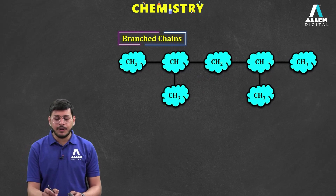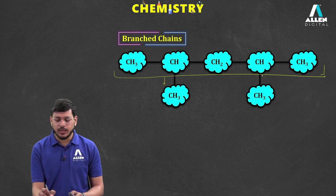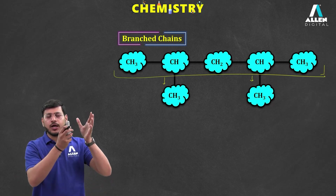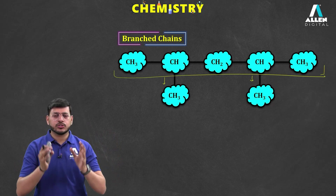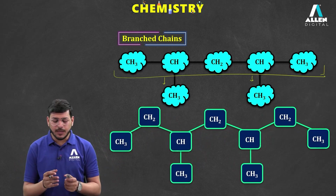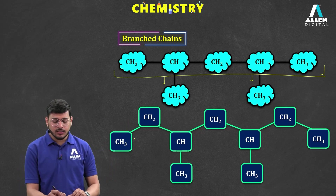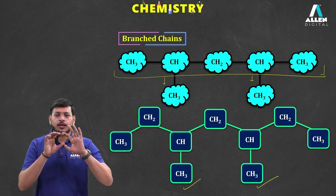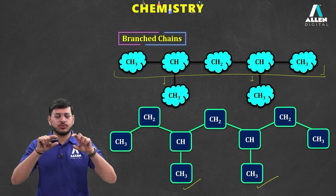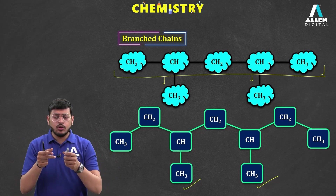In a branch chain, a branch is attached to the main straight chain. Consider a straight chain of five carbons, but with two branches coming out from it. That branched structure is a completely different compound compared to the straight chain, and it will have a different name.